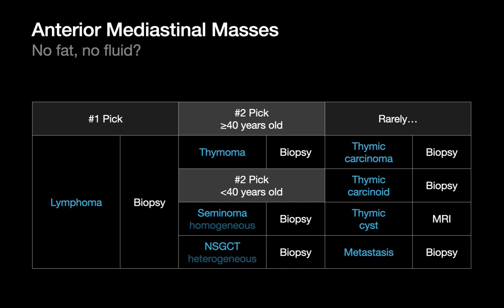The number two and number three most likely causes of an anterior mediastinal mass with no fluid and no fat are thymomas and germ cell tumors. The order of those alternates depending on the patient's age — in younger folks, germ cell tumors are probably number two and thymoma number three, whereas in older folks above 40, thymoma is number two and germ cell tumors number three. Then there are less common explanations like thymic carcinomas and carcinoids.